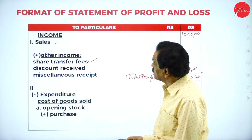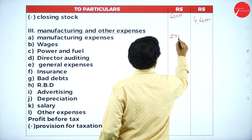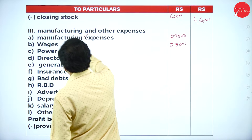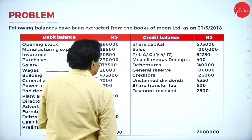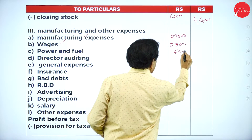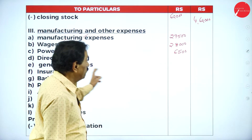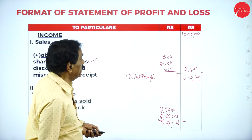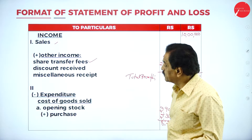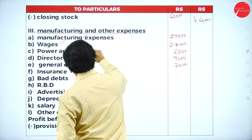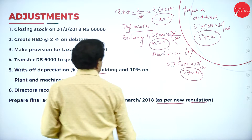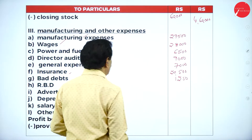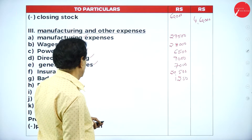Now dump all expenditures one by one: manufacturing expenses ₹29,500, wages ₹28,000, power and fuel ₹6,500, director and audit fees ₹9,000, general expenses ₹7,000, insurance ₹20,500, bad debt ₹1,250, new RBD ₹5,200. Be very careful — go one by one. Advertisement ₹3,000, salary ₹1,78,500.